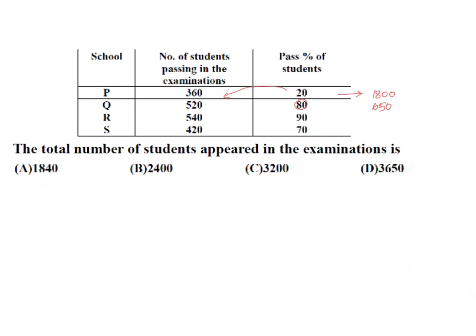90% is 540. If you divide 54 by 9, it will be 6. Therefore, it must be 600. 7 into 6 is up, this is also 600. Therefore, the total number of members in all the schools, if you add everything.